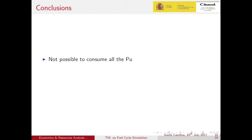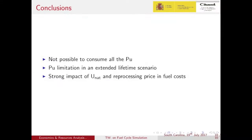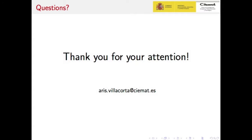In summary, with the tools described, it can be concluded that none of the scenarios is able to consume all the plutonium of the cycle, and this material also imposes a limitation in life-extended scenarios. The uncertainties around natural uranium and reprocessing prices translate into high uncertainty in fuel cost, due to the large impact these parameters have. Fixed costs offer limited savings when comparing with strategies involving reprocessing. Thank you for your time, and if you have any questions, feel free to contact me.